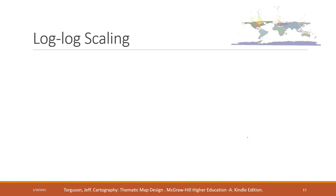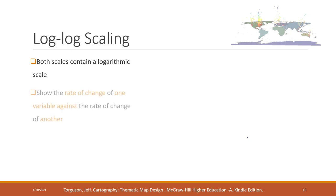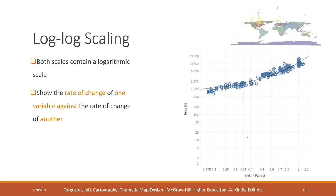The last type is called log-log scaling, which means both scales use logarithmic scales. It is very rare to see. It is used to show the rate of change of one variable against the rate of change of another variable. This is how it looks using log-log scaling, and we can see there is still a curved line between the weight and the price.